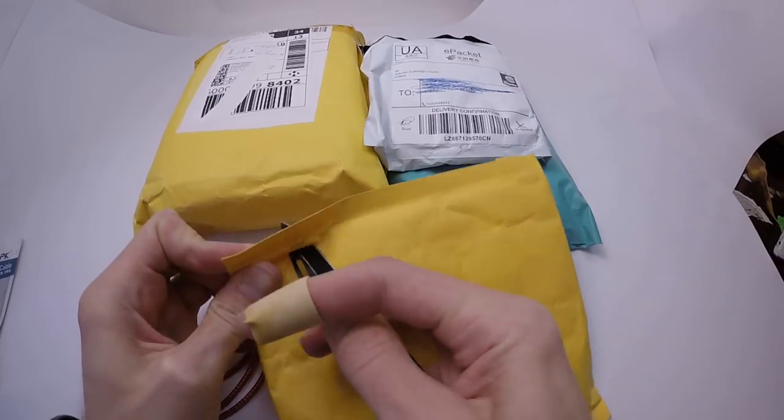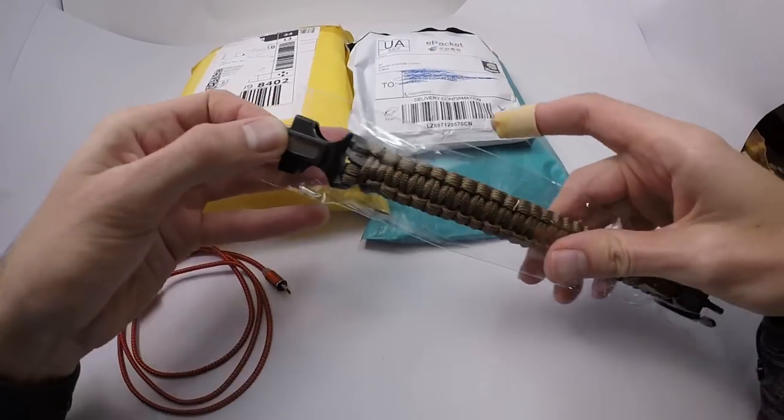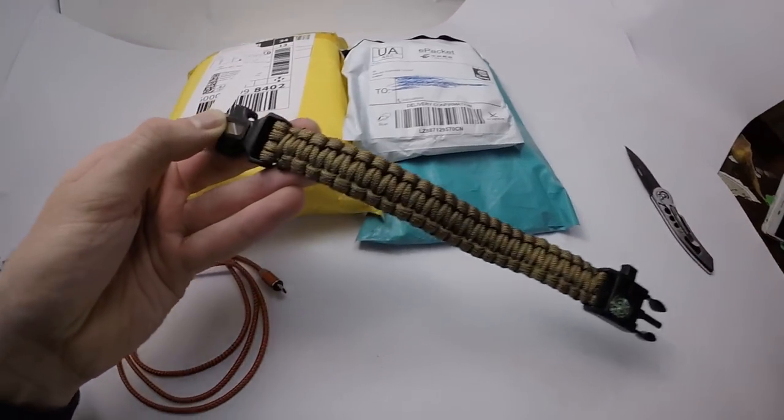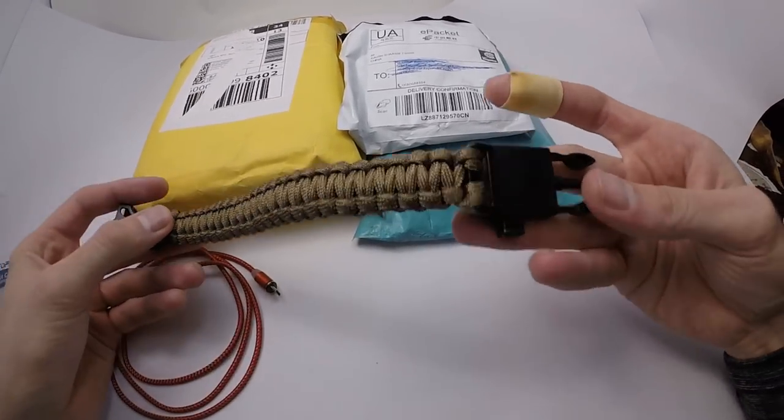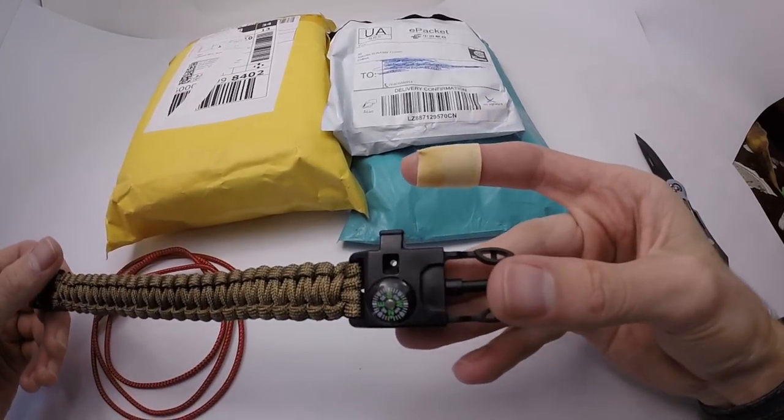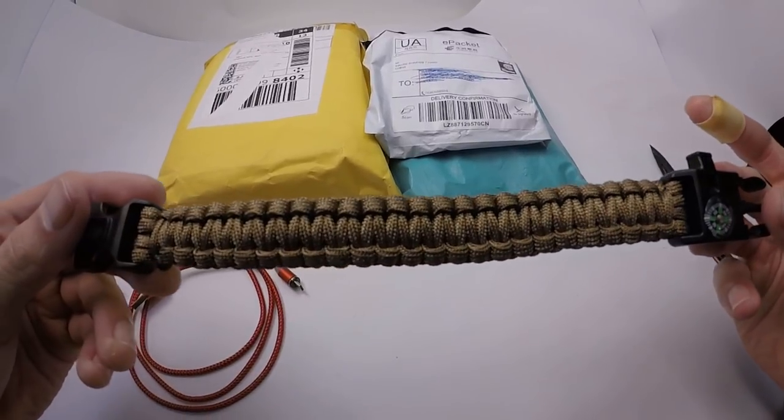Let's see what we have in this parcel. Wow, it's a paracord survival bracelet. It looks awesome. It has a compass, a whistle, paracord rope and a fire-starting kit.